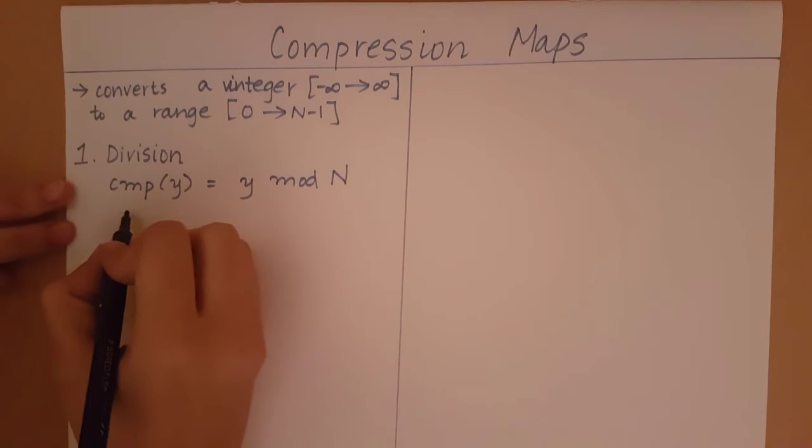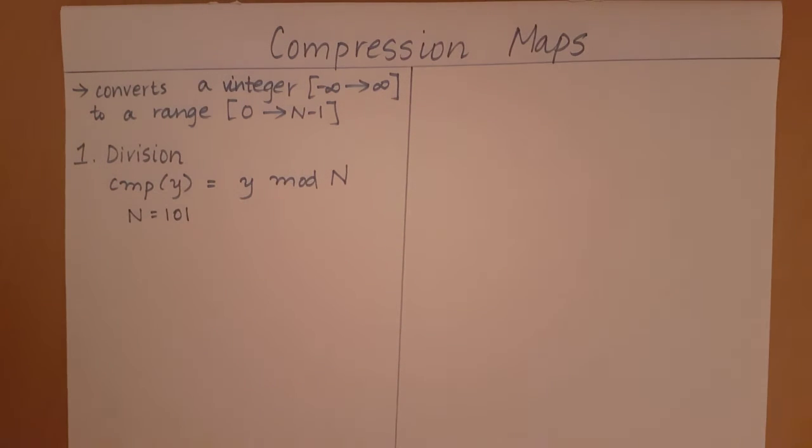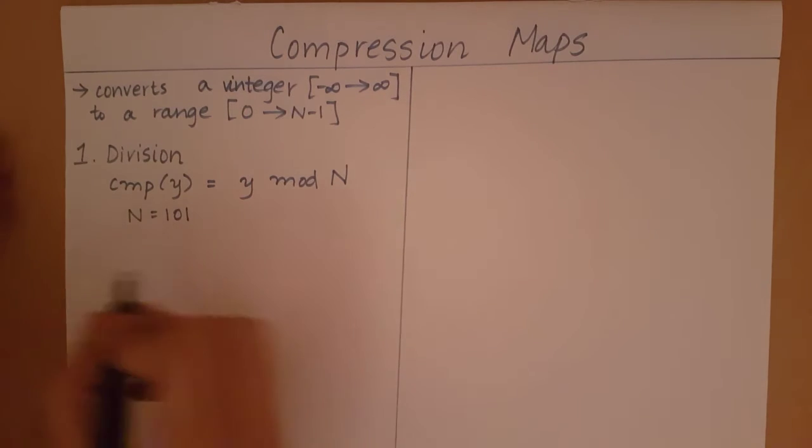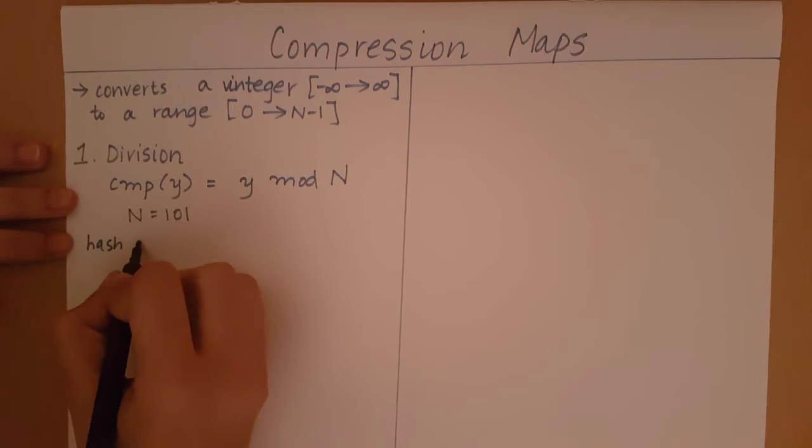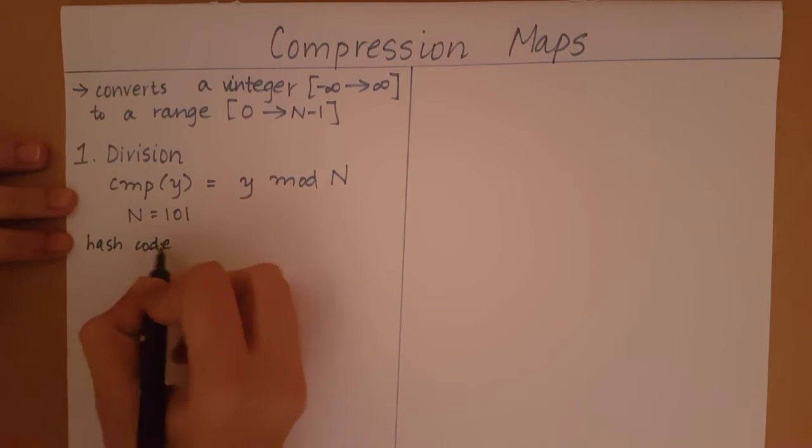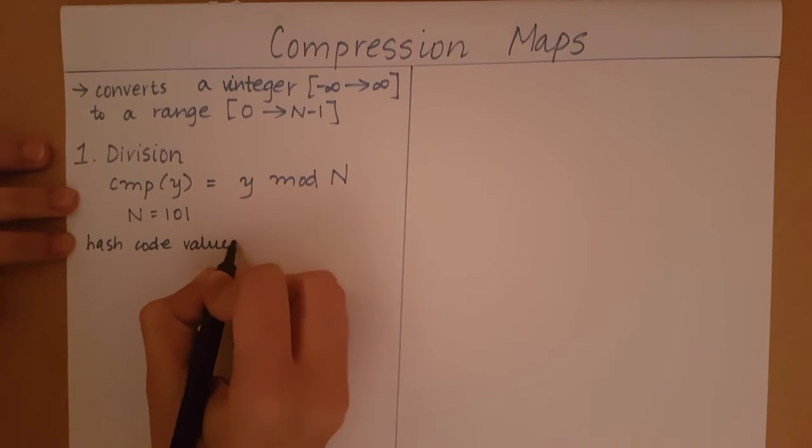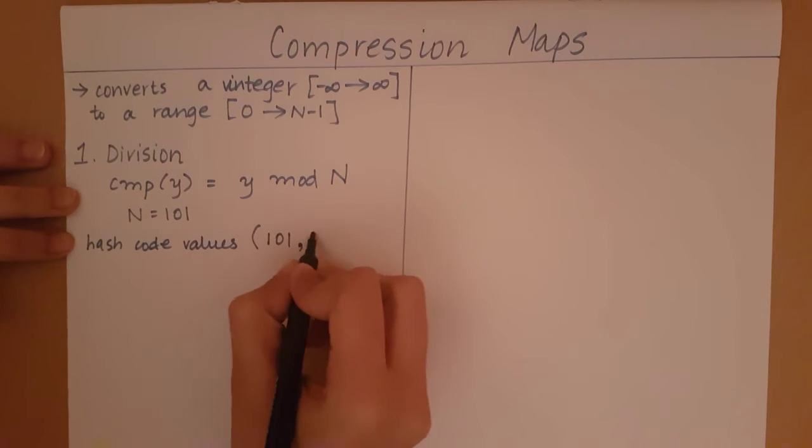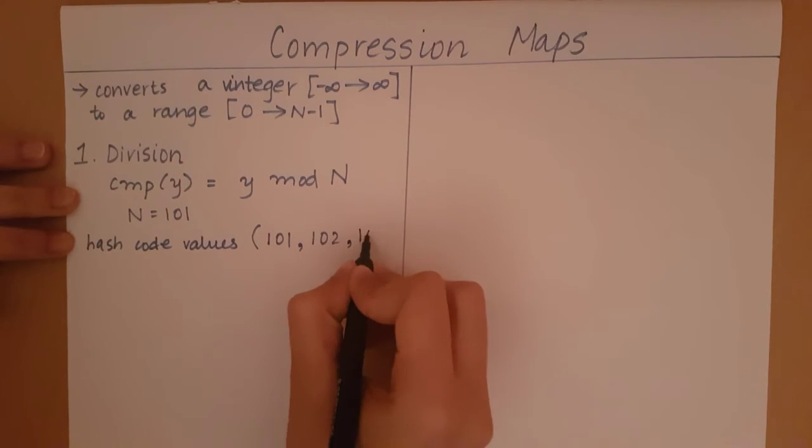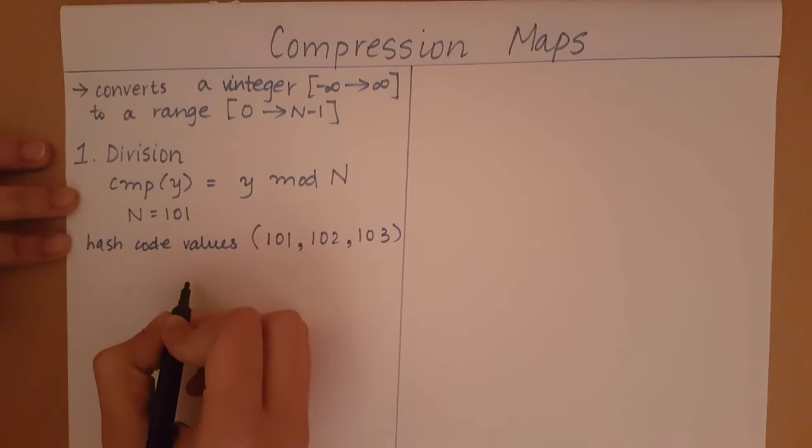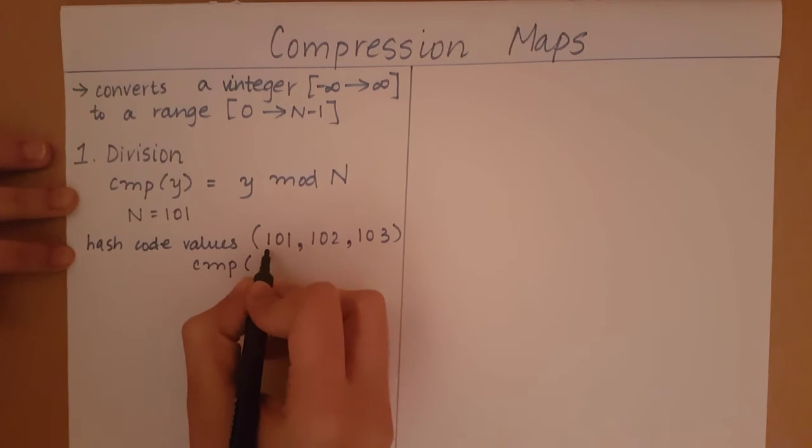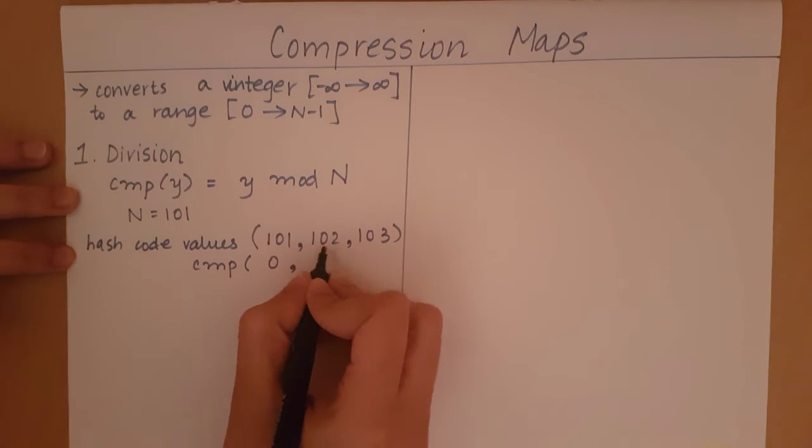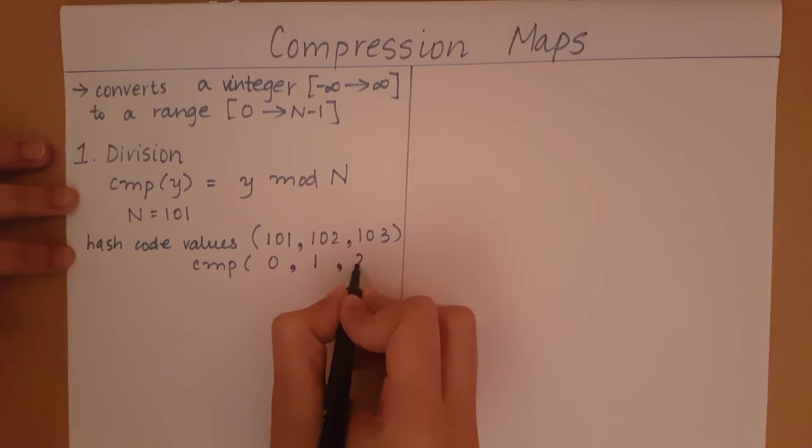Let me take an example for this. Let's take n equal to 101. Let's say the values I have received from my hash code are 101, 102, 103. So now the compression map of this is going to be 101 mod 101 will be 0, 102 will map to 1, 103 will map to 2.